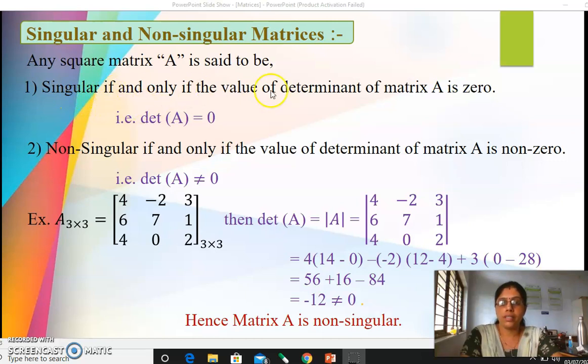So for singular matrices the determinant value of that particular matrix A should be 0. You can write those elements into determinant form, expand it or evaluate it, check whether it is 0 or not. If the value is 0 the matrix is called singular matrix.